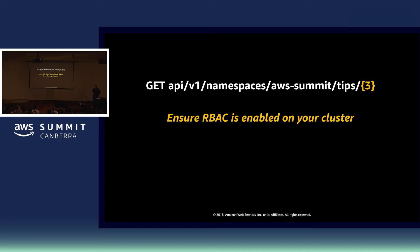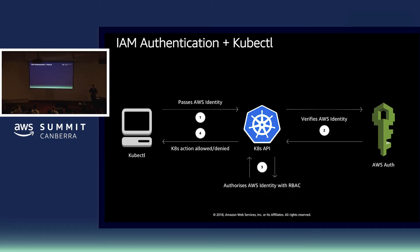Tip number three: role-based access control, least privilege access. It's a core principle of well-architected solutions — security at all layers and levels. At AWS, everything we build uses IAM as a mechanism for authentication and authorization. EKS is no different. One of the really awesome tools created by our partner Heptio is the AWS IAM Authenticator for Kubernetes. This allows us to gate API calls to the Kubernetes API with IAM authentication.